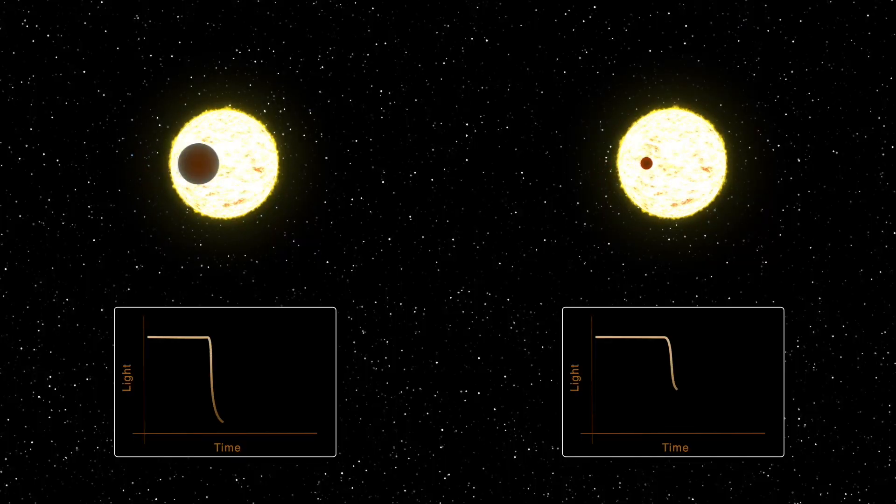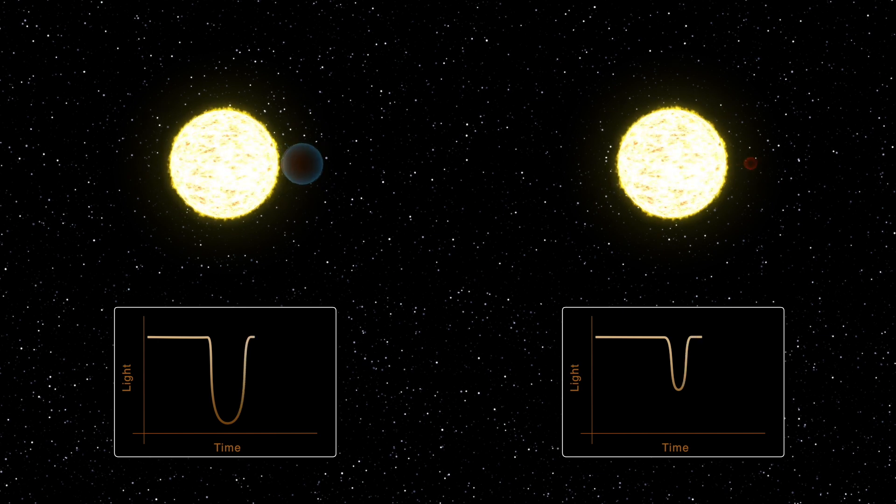Once the distance to the star has been determined, the amount the star dims can be used to see how big the planet is, its distance from the star, and the exoplanet's mass based on the orbit of the exoplanet.